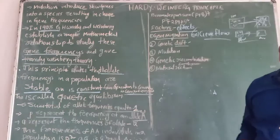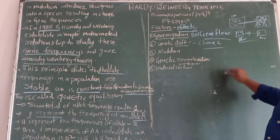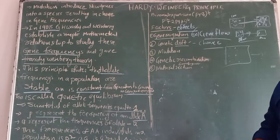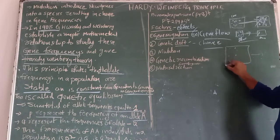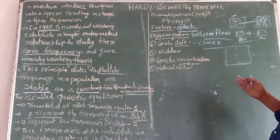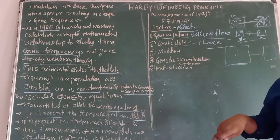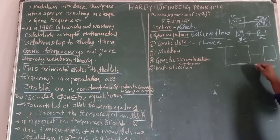Genetic drift — drift means change. In genetic drift, by a small chance or small error in a large population, allele frequencies are reduced. By a small error, allele frequencies are changing and reduced in a population, so that finally new speciation will be formed. A large group of population is separated and new species are formed — that is what we call the founder effect.